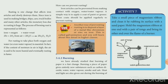We have already studied that burning paper is a fast change. Burning a piece of paper gives entirely new substances such as carbon dioxide, water, water vapor, smoke, and ash. The heat and light are also given out during the burning of paper.